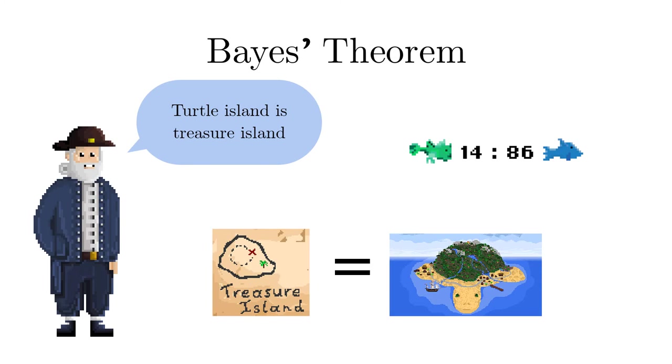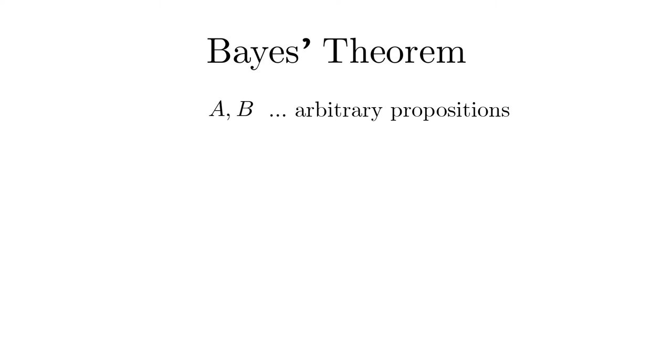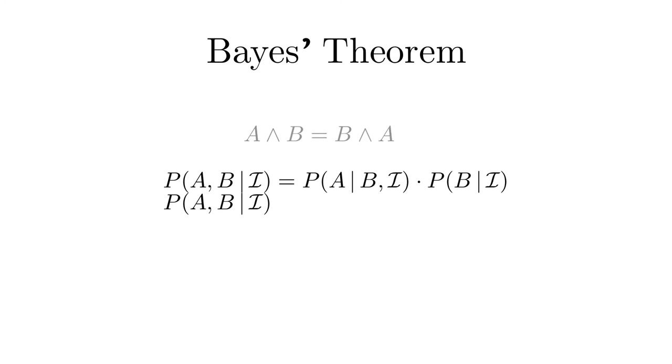Let A and B be two arbitrary propositions. Then the product rule tells us, alternatively, since A and B is equal to B and A, we find, so the right-hand sides have to be equal, leading to Bayes' theorem.